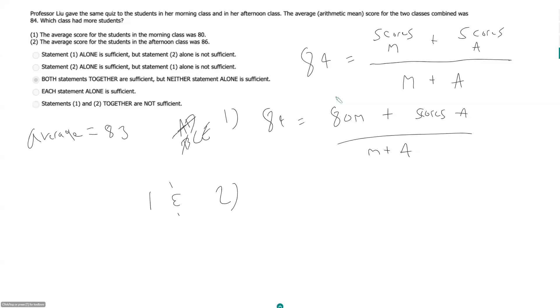But we know our average is 84. So what does that mean? That means our average is weighted a little more towards the scores from this class here. So that means the afternoon class must have some more students than the morning class. So based on that, if you understand conceptually how weighted averages work, you can reason it out that way.